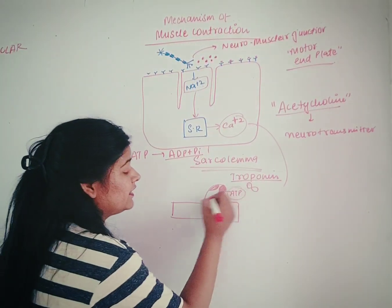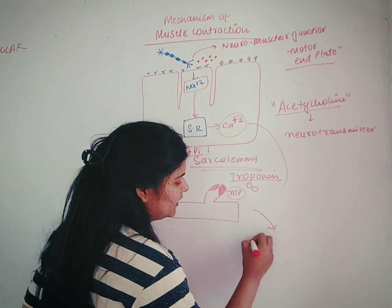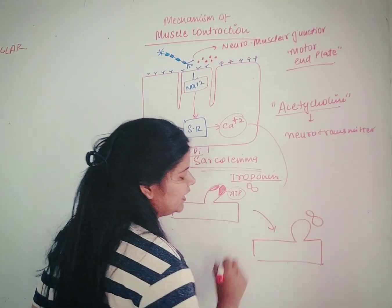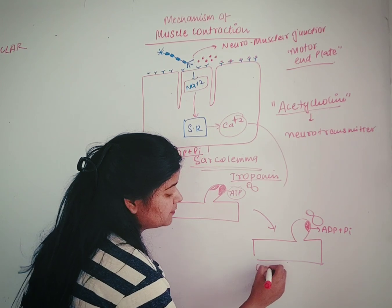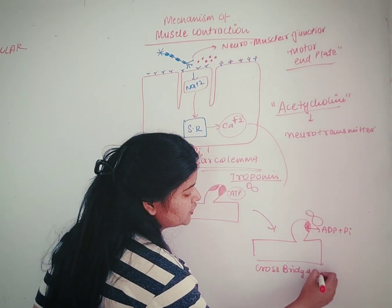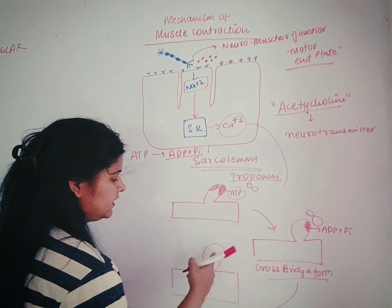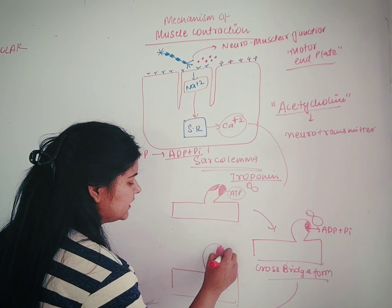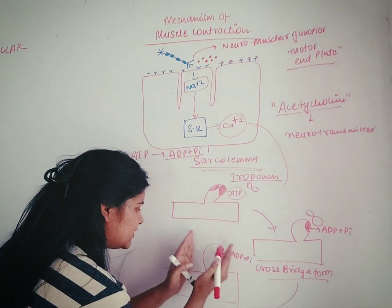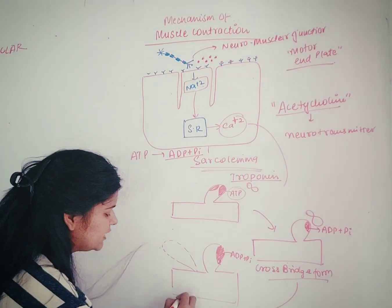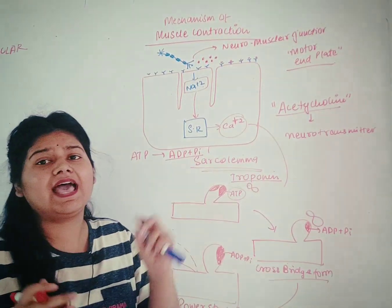After ATP is hydrolyzed to ADP plus inorganic phosphate, the affinity towards actin becomes high and a cross bridge is formed — actin binds with the myosin head. Then the ADP and inorganic phosphate are removed from the head of the myosin, and the myosin head moves, pulling the actin. This movement is called the power stroke, which produces muscle contraction.